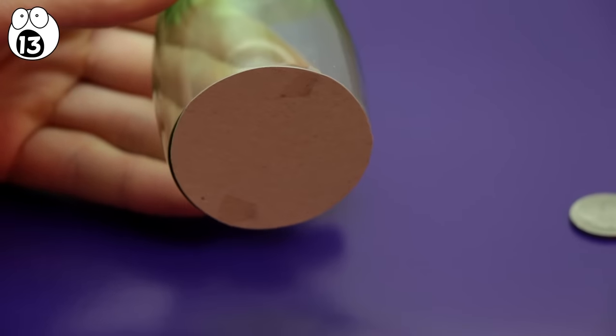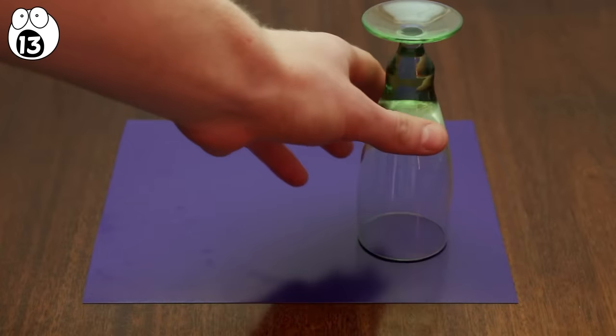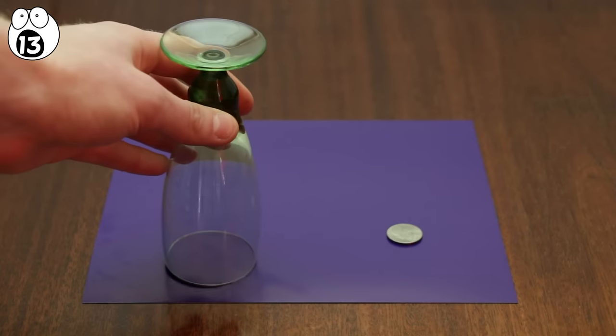Beforehand, you'll have cut out a circular piece of the colored paper and glued it to the top of the wine glass. So when you slide the glass over the coin, it looks like it has vanished when really, it's hidden underneath the colored paper. Slide the glass away, and look, the coin is back.